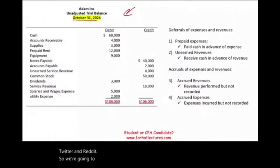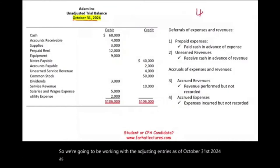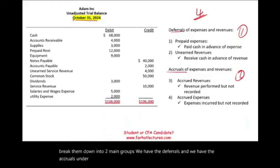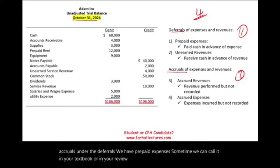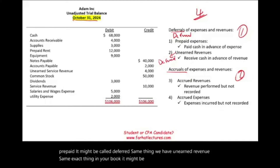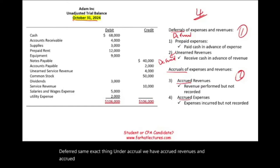We're going to be working with the adjusting entries as of October 31st, 2024. We have four types of adjusting entries, and I'm going to break them down into two main groups: deferrals and accruals. Under deferrals, we have prepaid expenses — sometimes called deferred expenses — and unearned revenue, sometimes called deferred revenue. Under accruals, we have accrued revenues and accrued expenses. In total, we have four types.